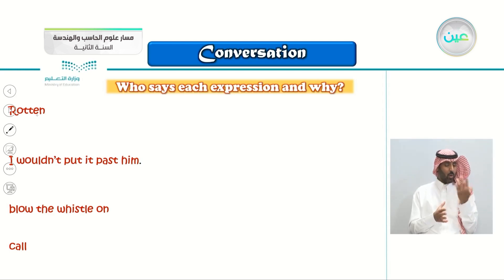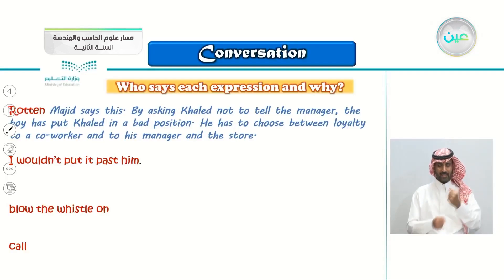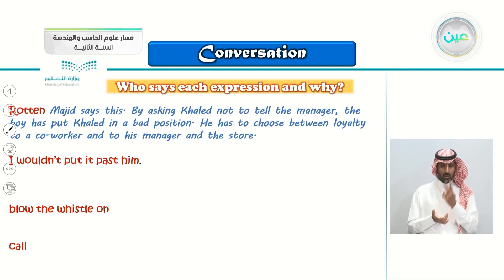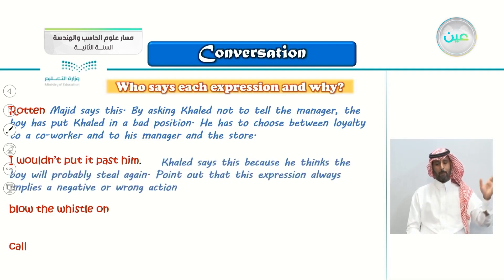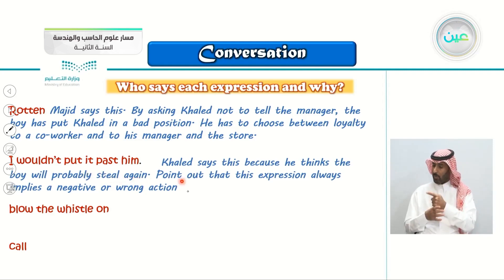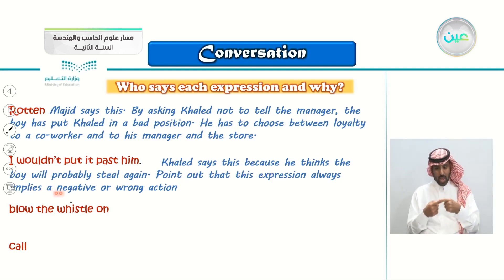Who says each expression and why? The word 'rotten' — Majid says this because by asking Khaled not to tell the manager, the boy has put Khaled in a bad, rotten position. He has to choose between loyalty to a co-worker and loyalty to his manager and the store. 'I wouldn't put it past him' — Khaled says this because he thinks the boy will probably steal again. The expression always implies a negative or wrong action.